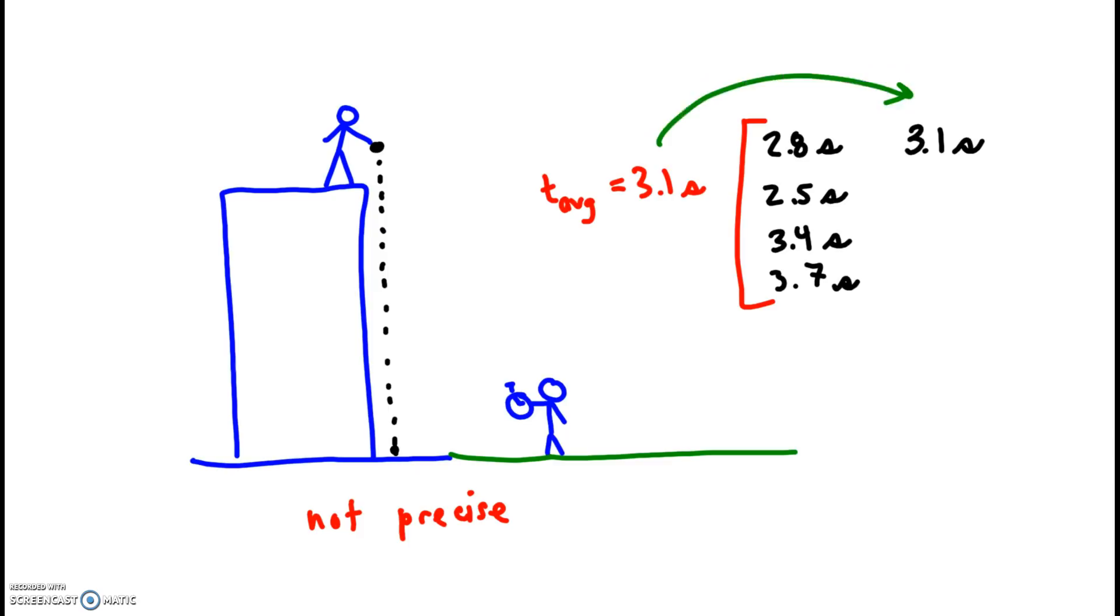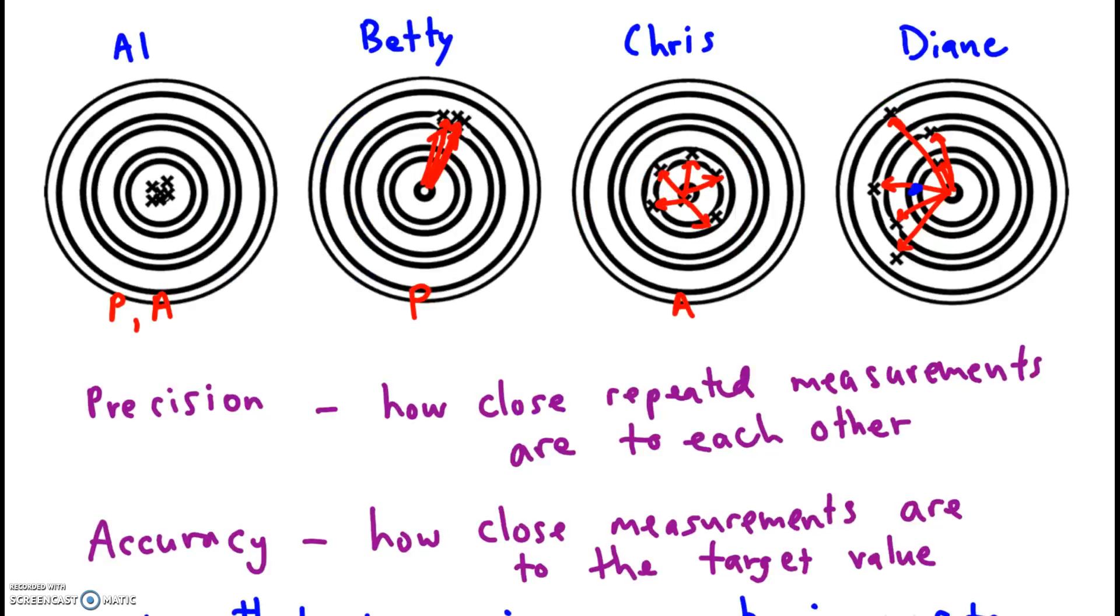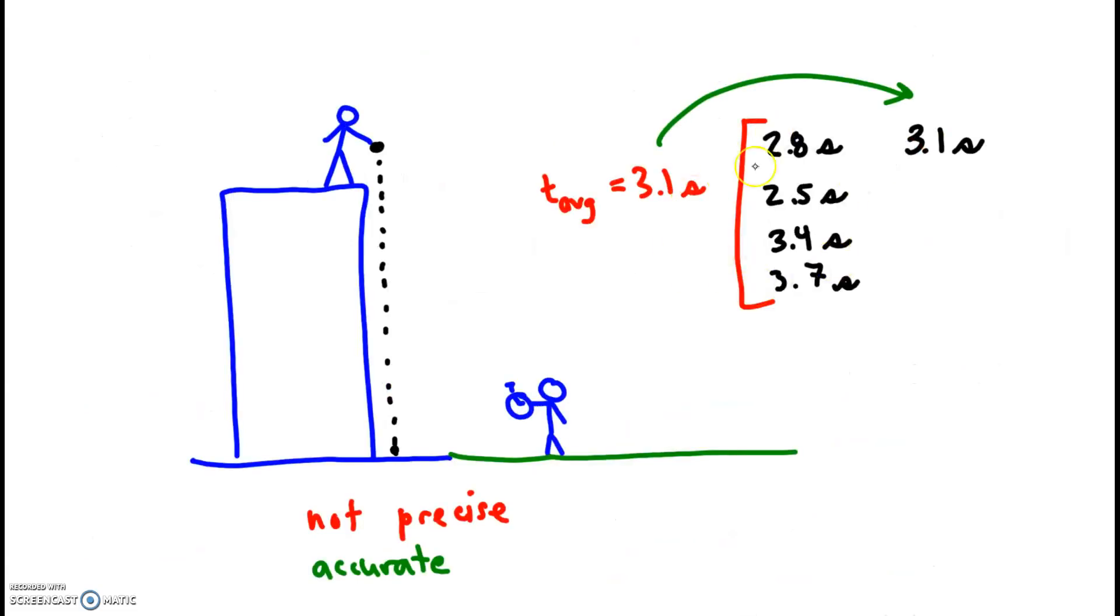And so this data is accurate. It's just like this target, Chris's target. You know, the data, yes, it is away from the target, but it's kind of spaced away randomly and evenly. Sometimes it's too high, sometimes it's too low. And on the whole, they average to give the target value.